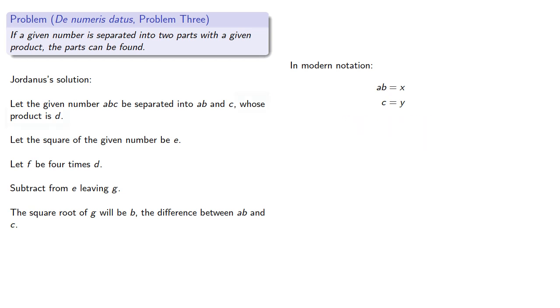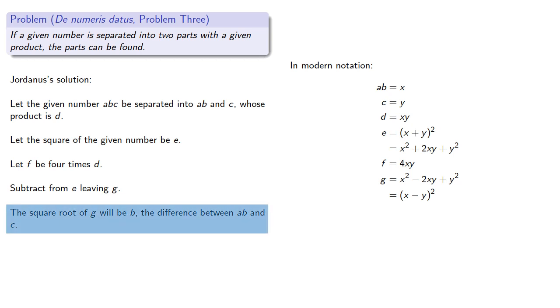We also have the product, which Jordanus is calling D. So D is XY. The square of the given number, that's E, that's X plus Y squared. And we'll expand that. Four times D, that's 4XY. We'll subtract that from E, so E minus F gives us G. Note that G is actually X minus Y squared. So the square root of G will be B, the difference between AB and C.